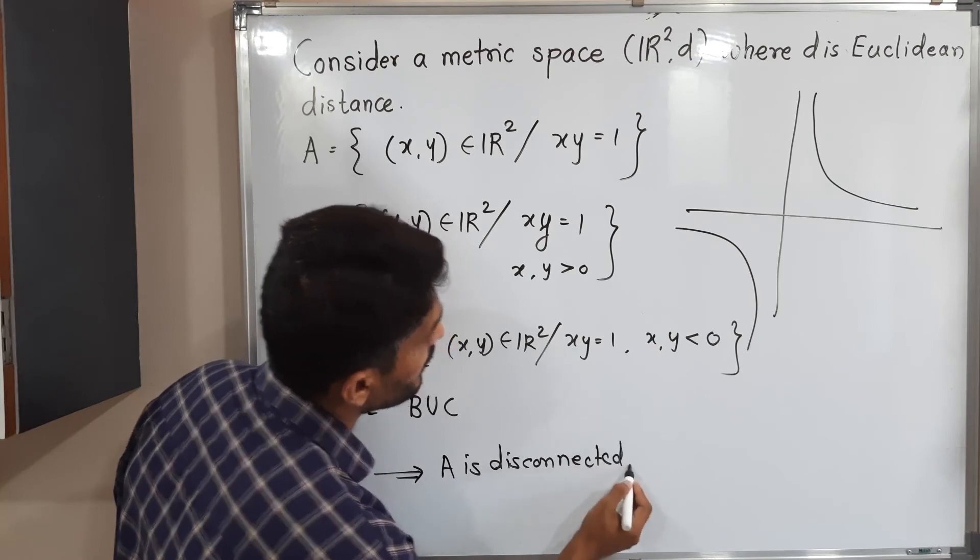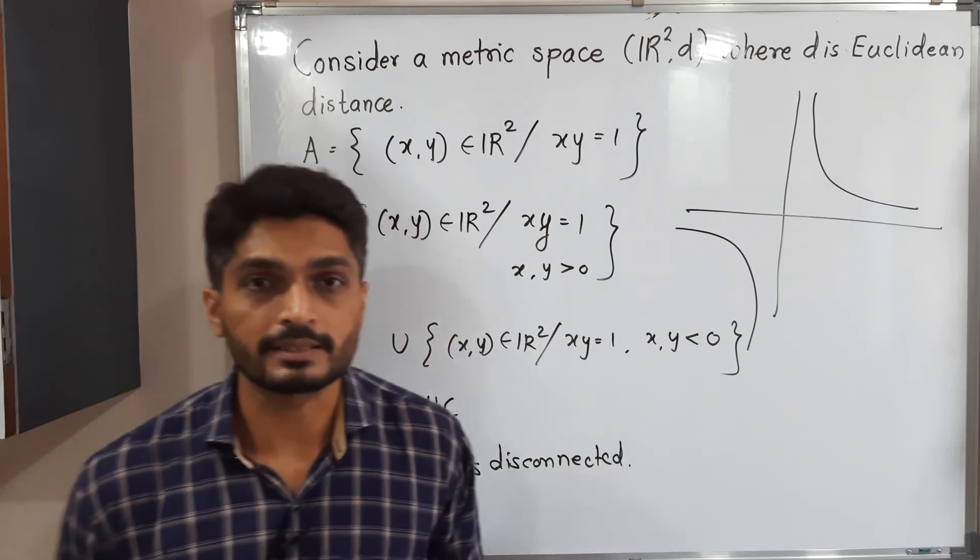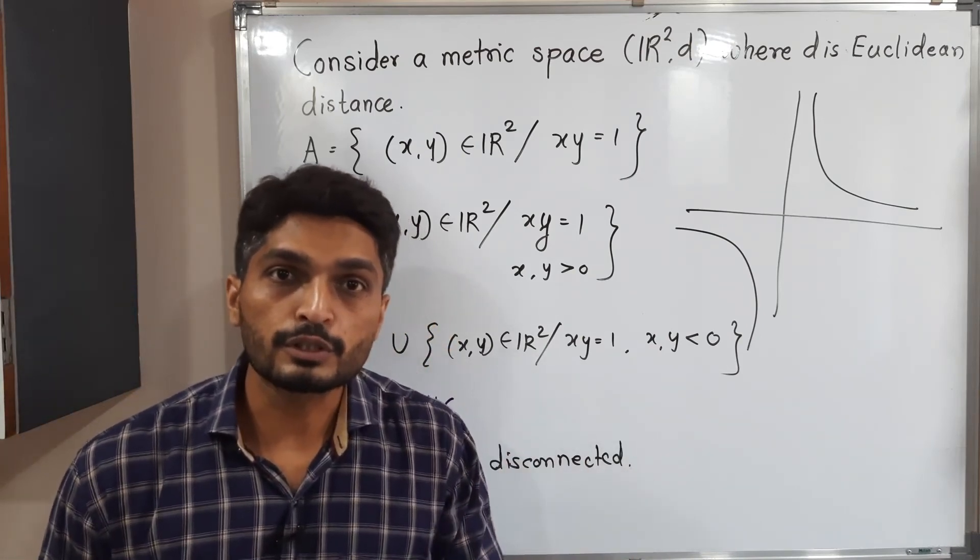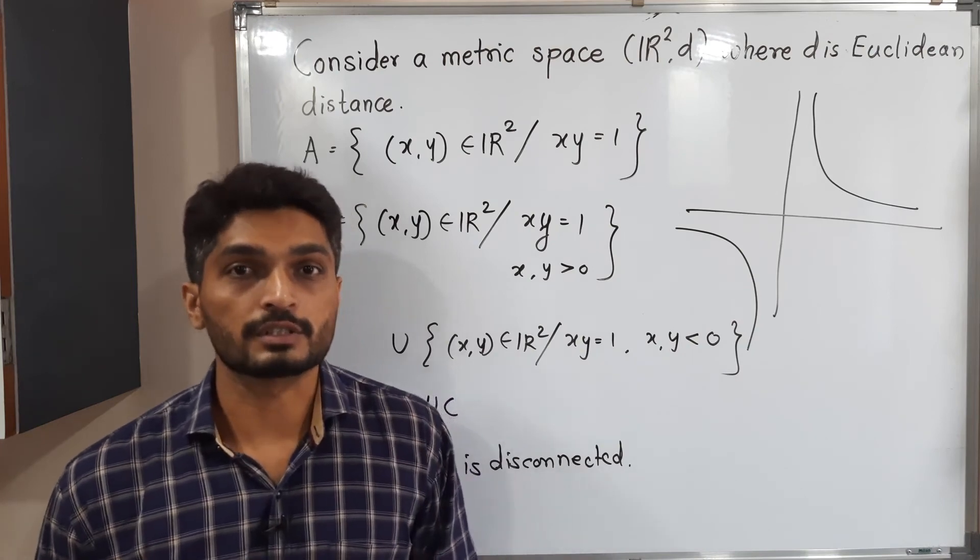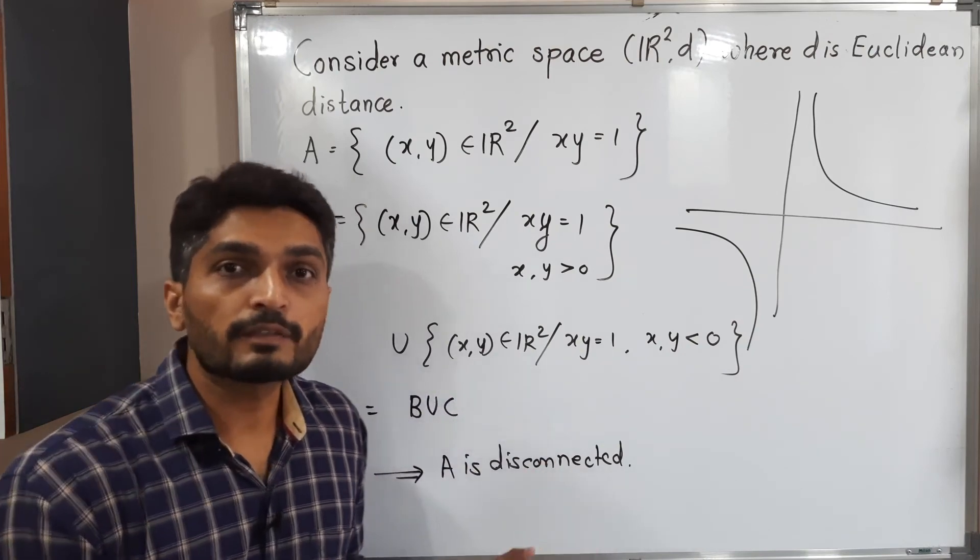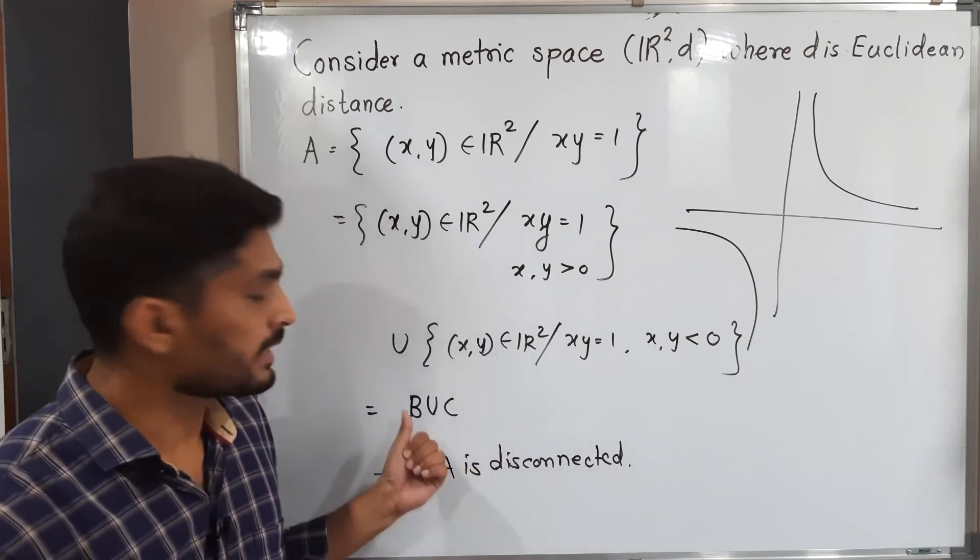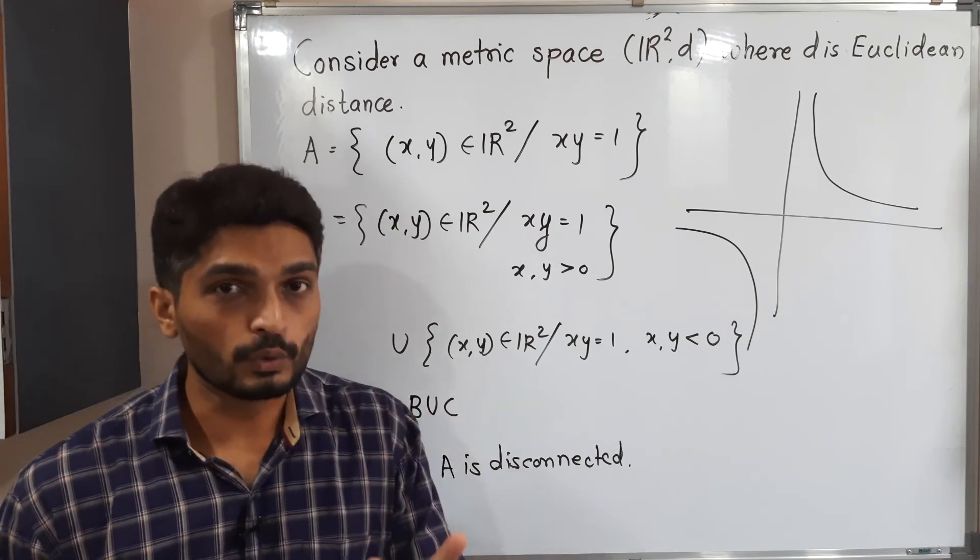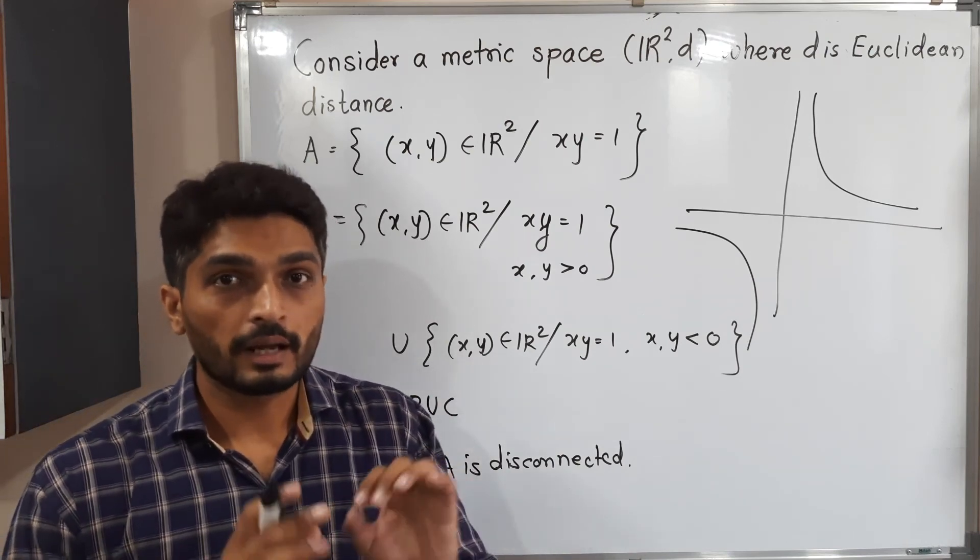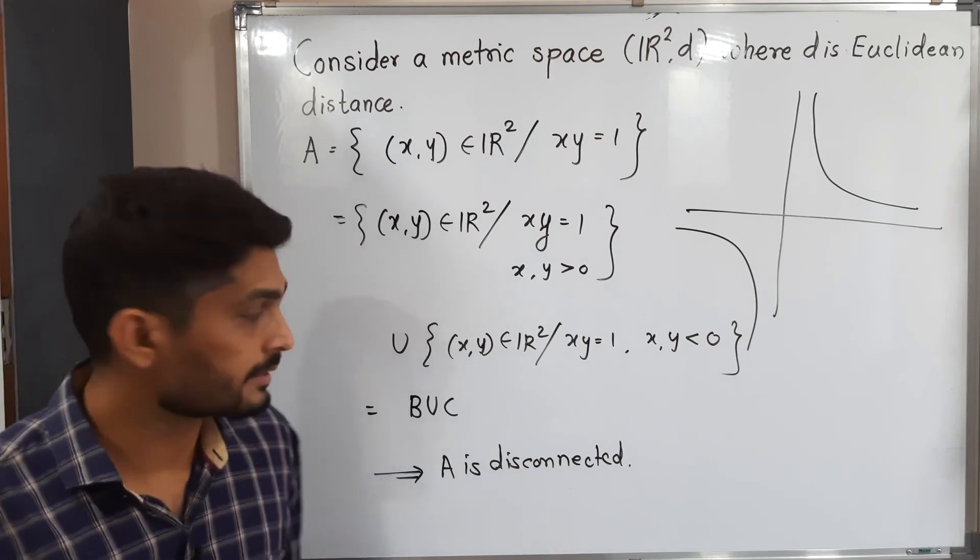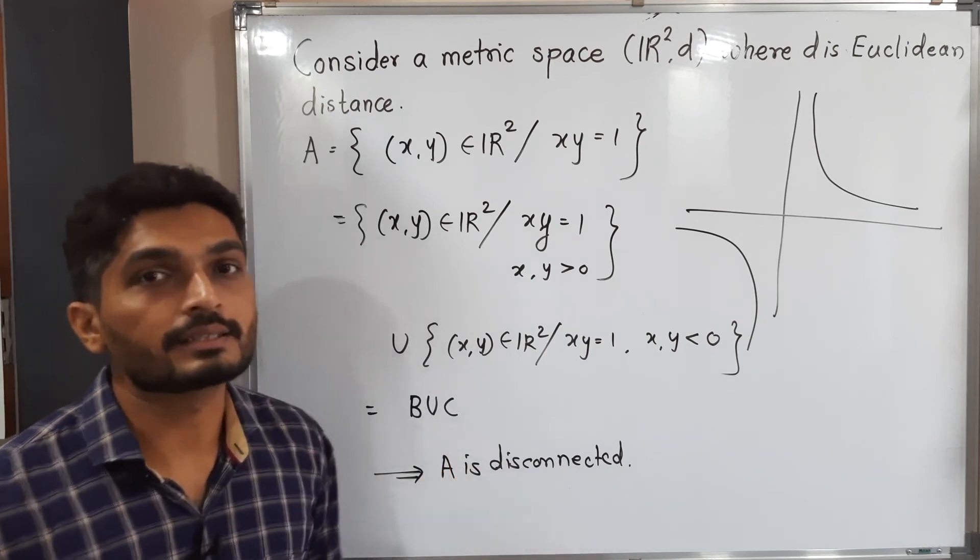See in previous videos we have already seen definition of disconnected sets. The main definition is there as well as equivalent definitions. Using main definition we can say A can be expressed as a union of two non-empty proper and separated sets. So therefore A is disconnected.